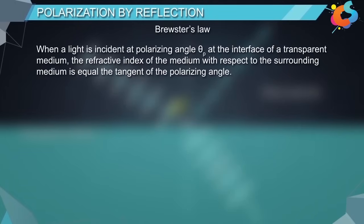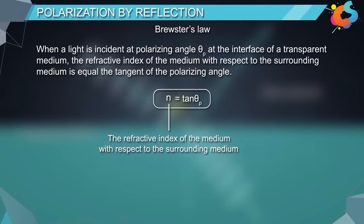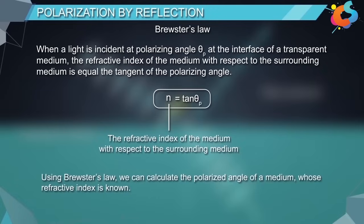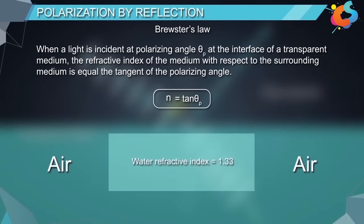Brewster's law states that when light is incident at polarizing angle θₚ at the interface of a transparent medium, the refractive index of the medium with respect to the surrounding medium is equal to the tangent of the polarizing angle. That is, n = tan θₚ, where n is the refractive index of the medium. Using Brewster's law, we can calculate the polarizing angle of a medium whose refractive index is known. For example, for glass with refractive index 1.5, the polarizing angle is 56.3° when surrounded by air. Similarly, for water with refractive index 1.33, the polarizing angle is 53°.